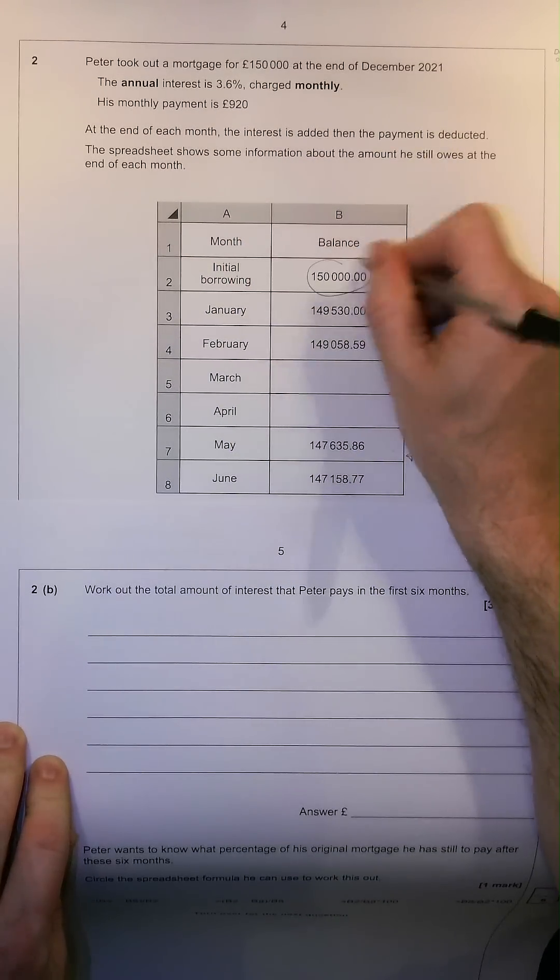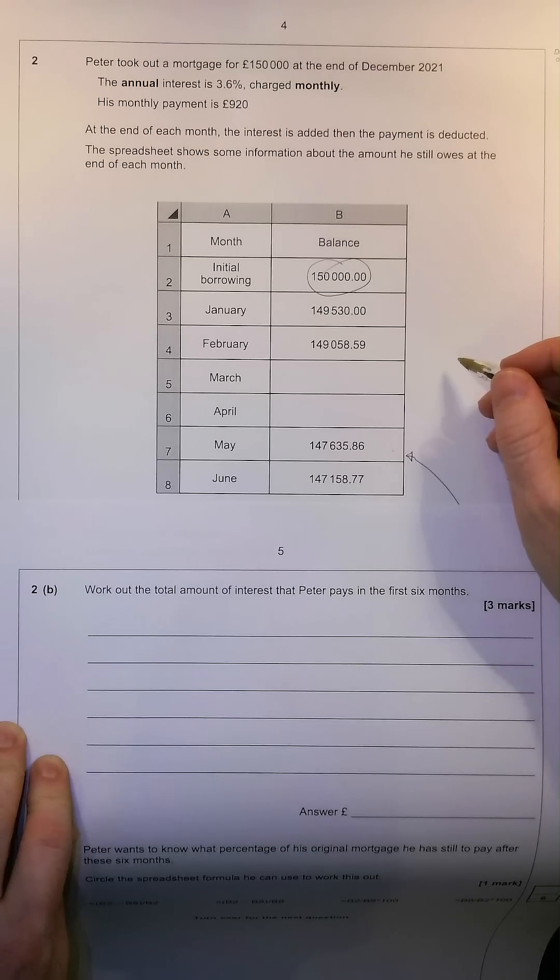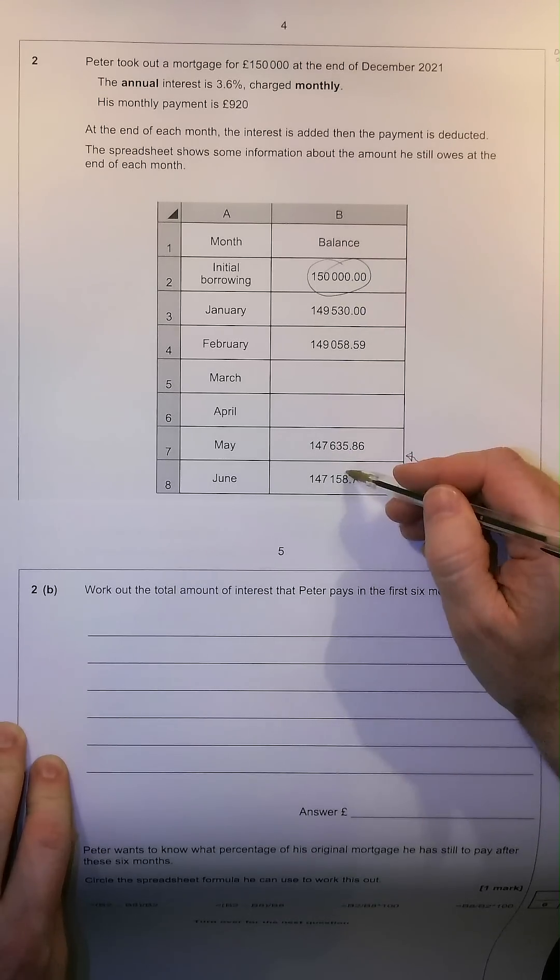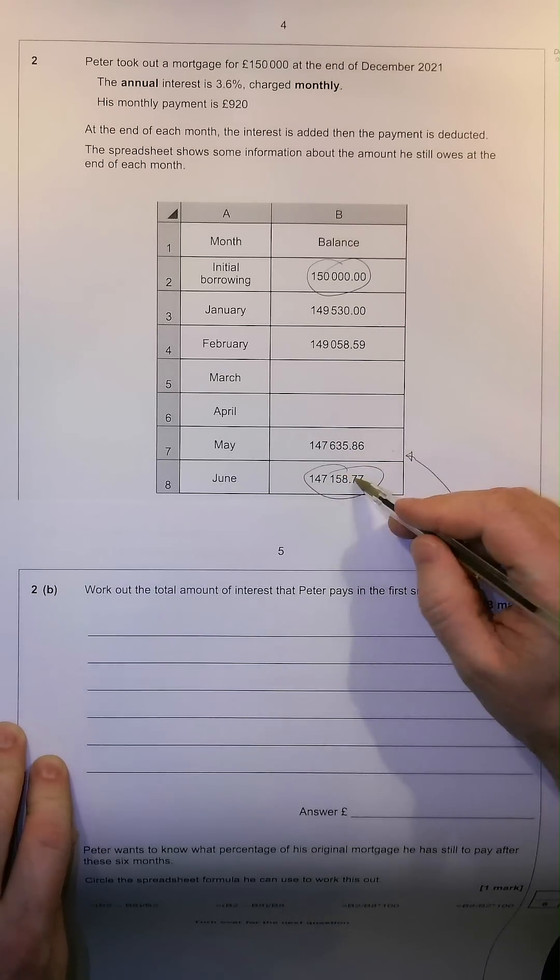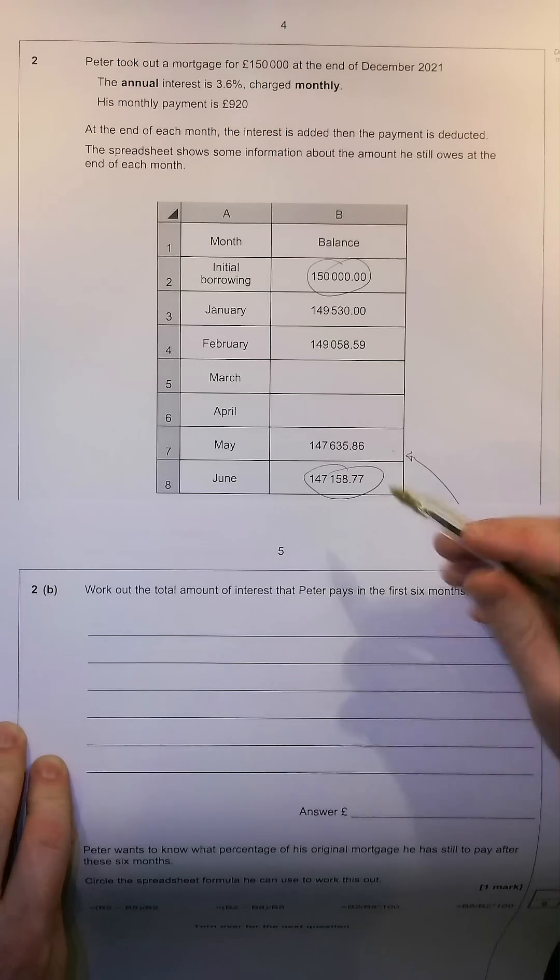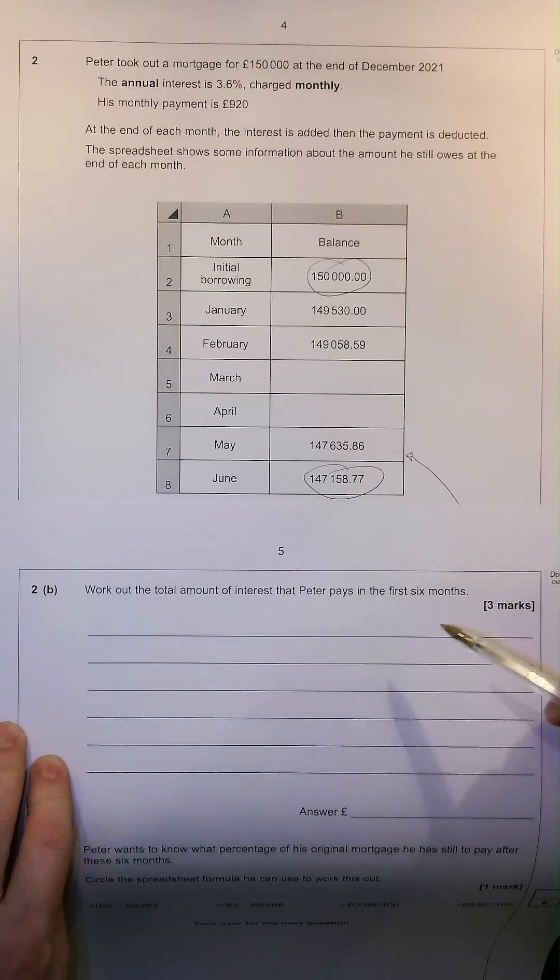So, initial borrowing, £150,000. After six months, the amount that he still owes is £147,158.77.